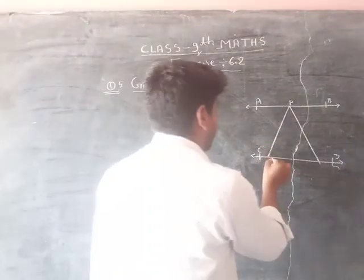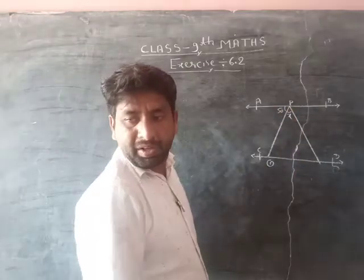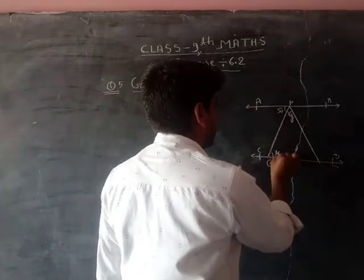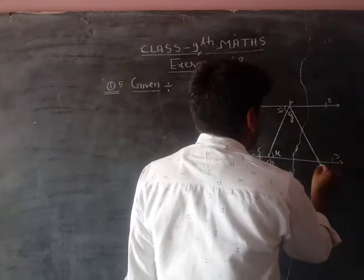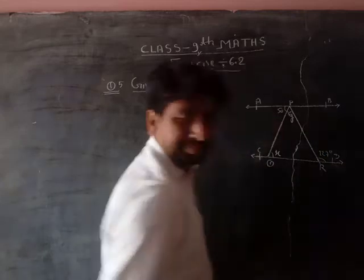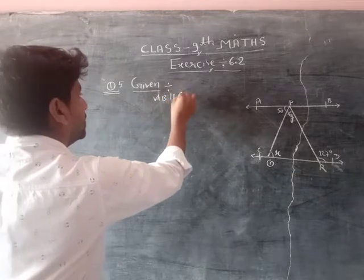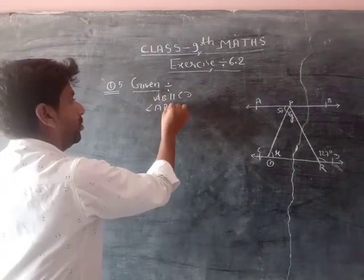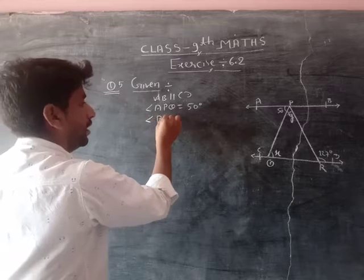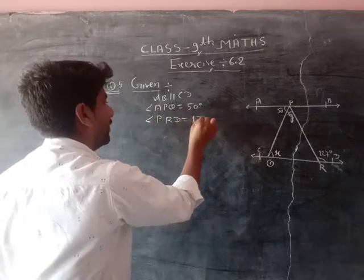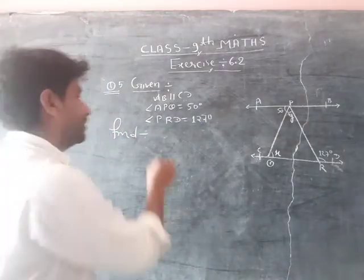Angle PRD here is 127 degrees. Clear sir, AB parallel CD and angle APQ equals to 50 degrees, angle PRD equals to 127 degrees. Find the value of x and y. Find x and y.